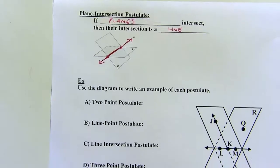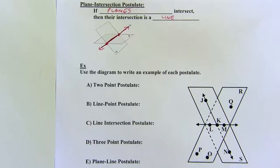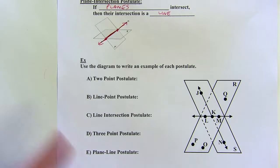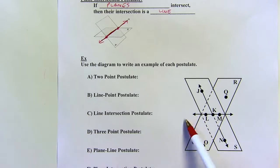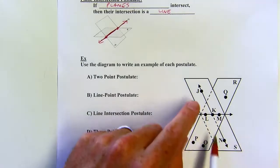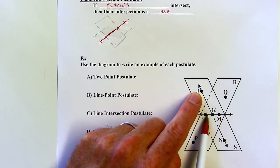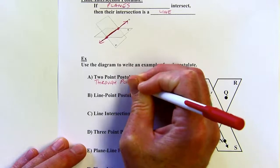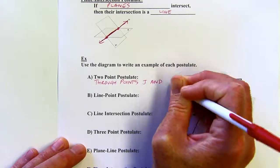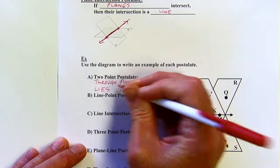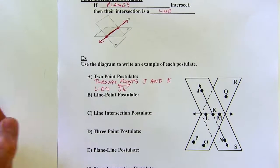Now we'll use this diagram to write examples of these postulates. For the two-point postulate — through any two points, there exists exactly one line — I'll pick points J and K. Through points J and K lies line JK, using the line symbol with the little arrows above JK.